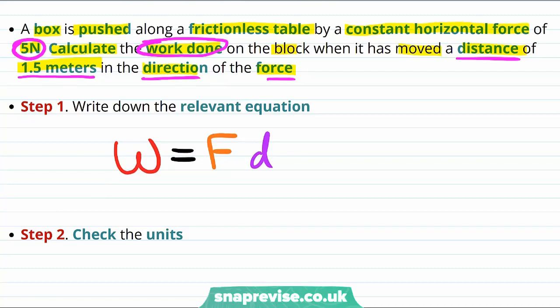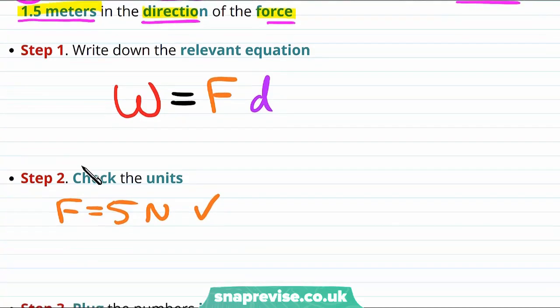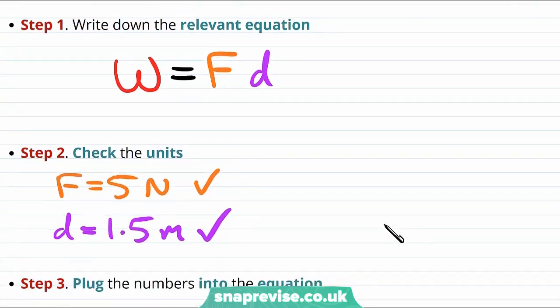Next we need to check the units of the quantities we've been given. Well, the force is given to be 5 Newtons and we wanted our force to be in Newtons, so this is already good. Also we wanted the distance to be in meters and we've been given that the distance moved was 1.5 meters. So both of our quantities are already in the correct units.